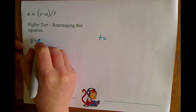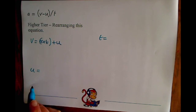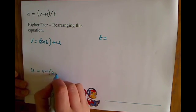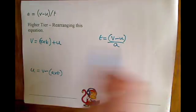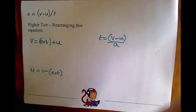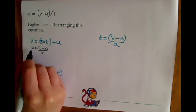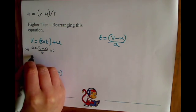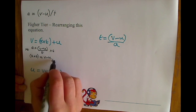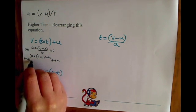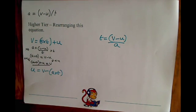For v equals, you should have a times t plus u. For u equals, you should have v minus a times t. For t equals, you should have v minus u divided by a. To show the working: starting with a equals v minus u divided by t, if you multiply both sides by t you get a times t equals v minus u. To get v equals, add u to both sides, giving v equals a times t plus u.